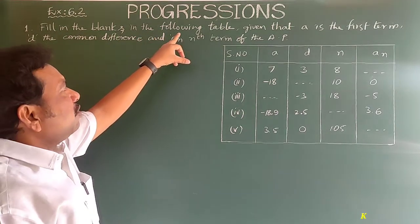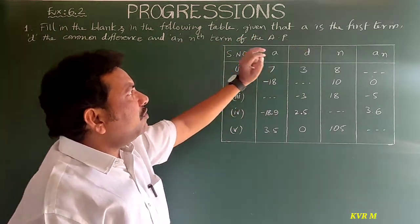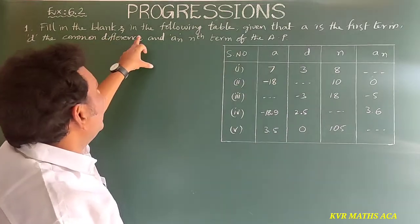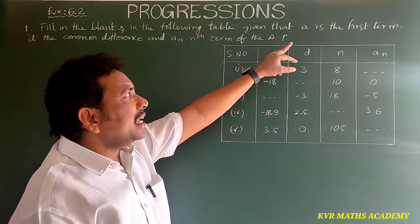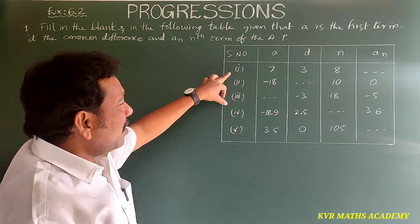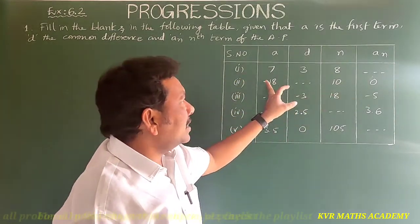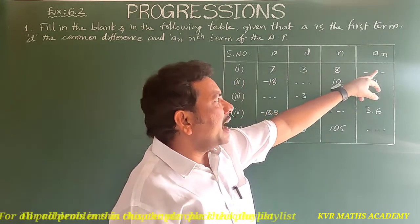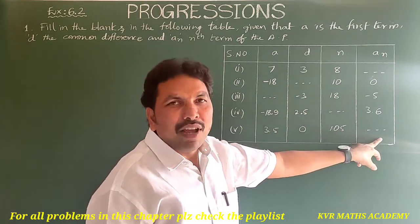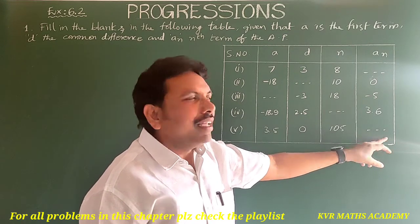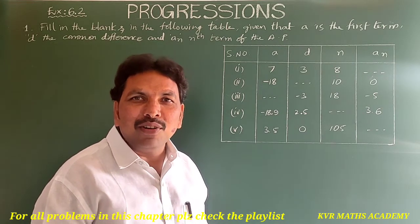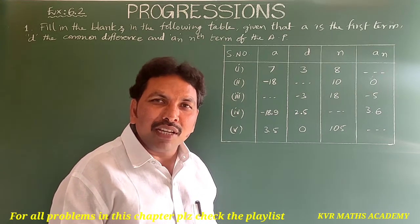The first question in Exercise 6.2 is: fill in the blanks in the following table, given that 'a' is the first term, 'd' is the common difference, and 'an' is the nth term of the AP. There are five sub-problems where we have to find missing values using only one formula: an = a + (n - 1) × d.